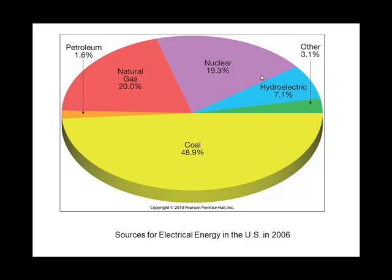We've been talking about anthropogenic pollutants, and a lot of them are related to the burning of fossil fuels. Just to show why that is, with regard to electricity in the United States, here's how we get our electricity: almost 49% comes from the burning of coal, then we have natural gas — a fossil fuel — at around 20%, and then petroleum, another fossil fuel, at 1.6%. So a large percentage of our electricity comes from the burning of fossil fuels.